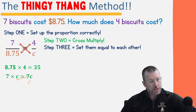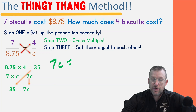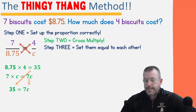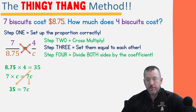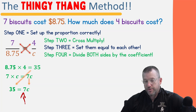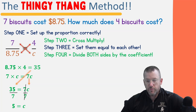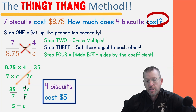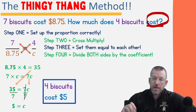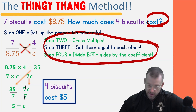C equals five — and what does C represent? In this problem, it was the cost of four biscuits, so four biscuits cost five dollars. Steps two, three, and four are the core of the thingy thang. As you get good at it, you'll just say to yourself: cross multiply and divide. Let's do one more — the total weight of 15 desks is 45 pounds. How much will 40 desks weigh? Step one: set up your proportion — 15 over 45 equals 40 over D.